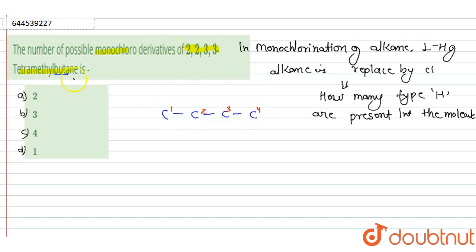2, 2, 3, 3 tetramethyl. Means in second position two methyl groups are present CH3, CH3. Also in third position two methyl groups are present CH3, CH3. Other valence of carbon is completed by CH3. This is the overall structure.